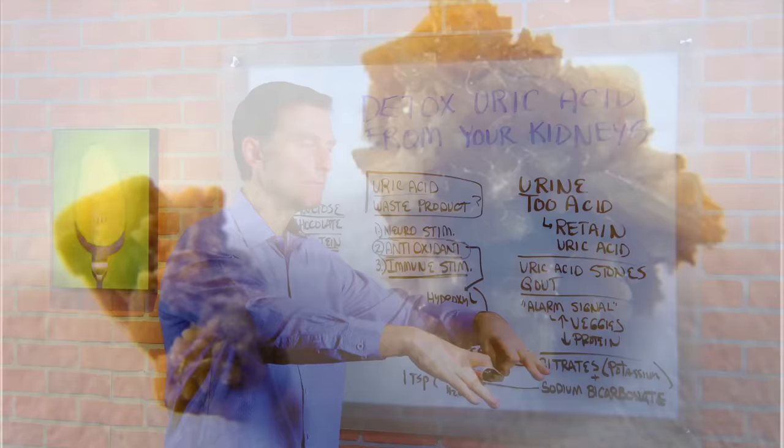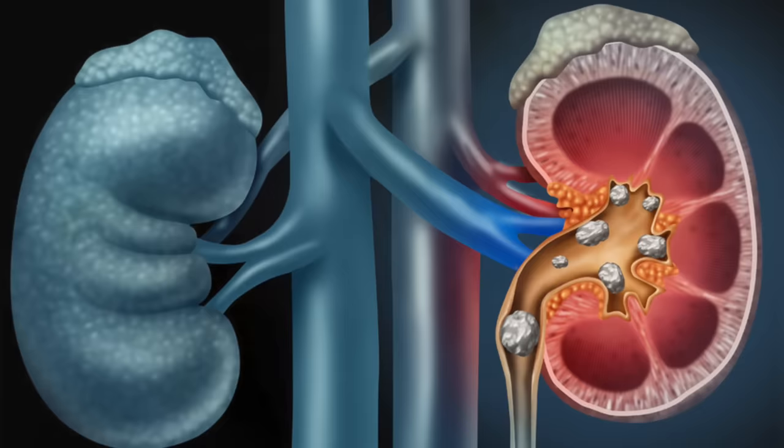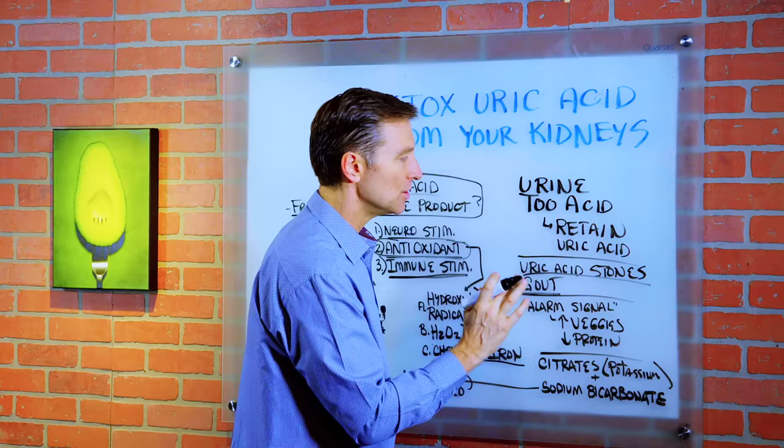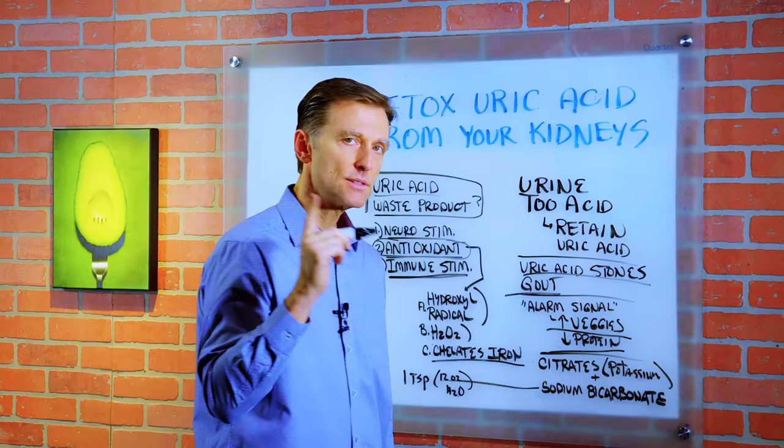Now, if you're susceptible to getting uric acid kidney stones or gout, there's a couple things you need to realize. Maybe you need to increase your vegetables or decrease your animal protein.